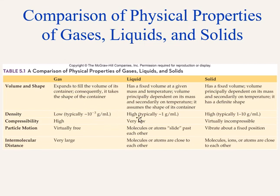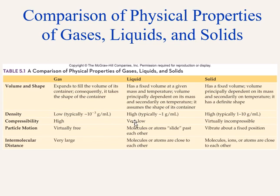Another property that differentiates gases, liquids, and solids is density. Gases have very low densities, on the order of 10⁻³ grams per milliliter, while liquid densities are about 1,000 times higher, around 1 gram per milliliter. Solids range from 1 to 10 grams per milliliter, with most being denser than liquids, with some exceptions. Gases are also highly compressible, which allows them to expand or be compressed into a very small volume. Liquids are not compressible to any appreciable extent, and solids are even less compressible than liquids.